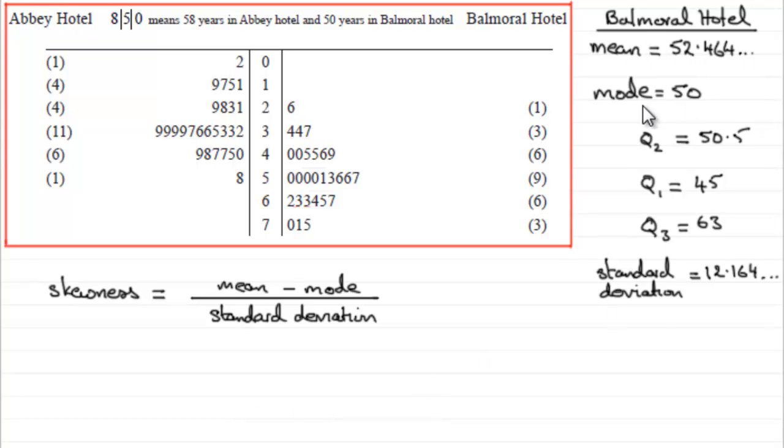I've got the statistics that we've calculated so far and we just need to substitute them into this formula. The mean being 52.464, so we put that in, 52.464 and so on minus the mode, the mode was 50, divided by the standard deviation which was 12.164 and so on.